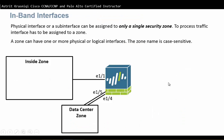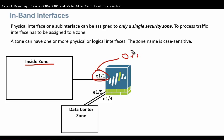In-band interfaces: a physical interface or sub-interface can be assigned to only a single security zone. To process traffic, an interface has to be assigned to a zone. A zone can have one or more physical or logical interfaces. The zone name is case-sensitive. For example, if we call it Inside Zone, I can put one interface in it — but this interface cannot belong to another zone. So I can't put it in Inside Zone and also in Outside Zone. One interface has to belong to one zone only.